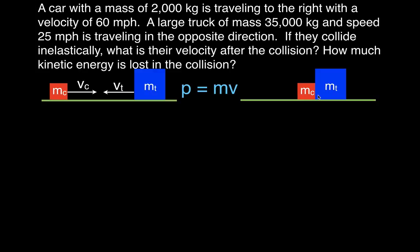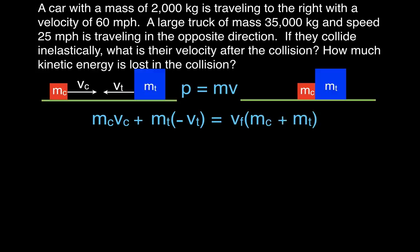Before the collision, both objects have mass and are moving, so we have the momentum of the car plus the momentum of the truck. The car's momentum is its mass times its velocity — traveling to the right, so that's positive. The truck is traveling to the left, so its velocity is negative. We set those equal to the final momentum: the two masses stuck together times the single final velocity.